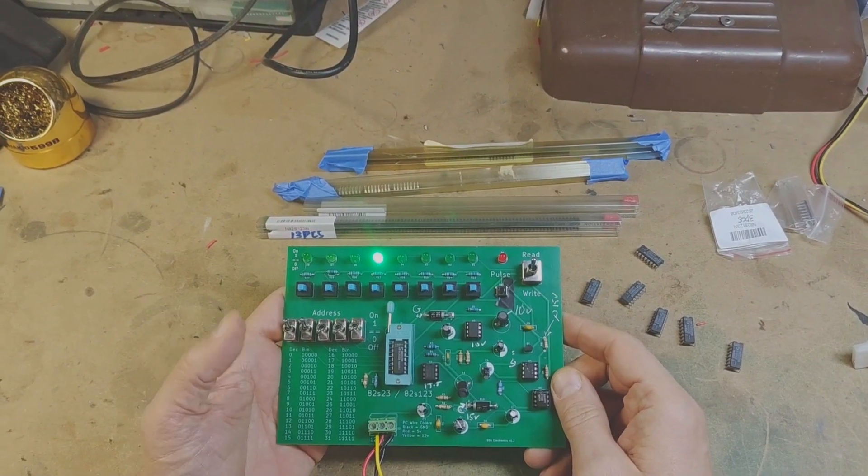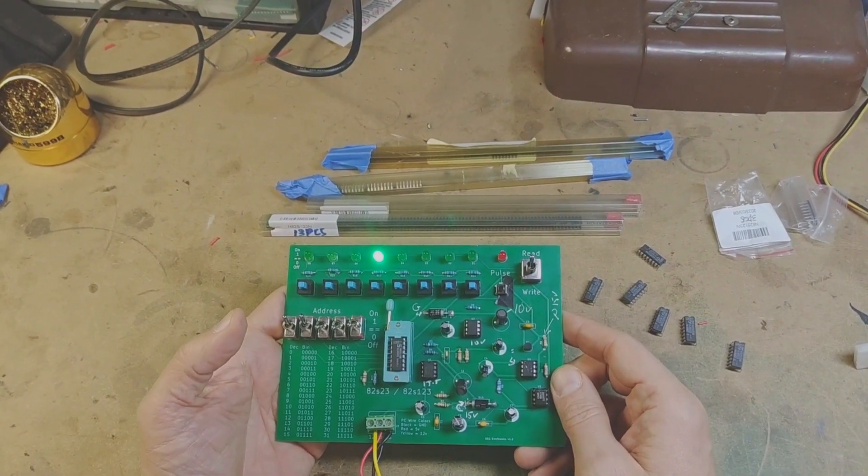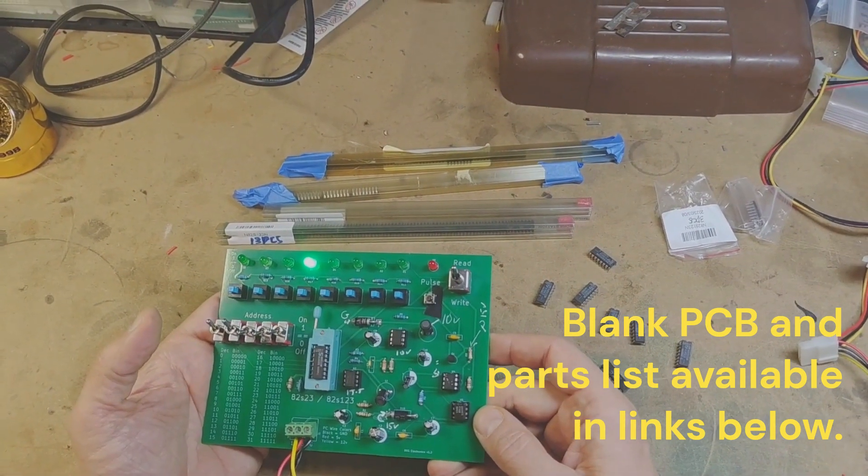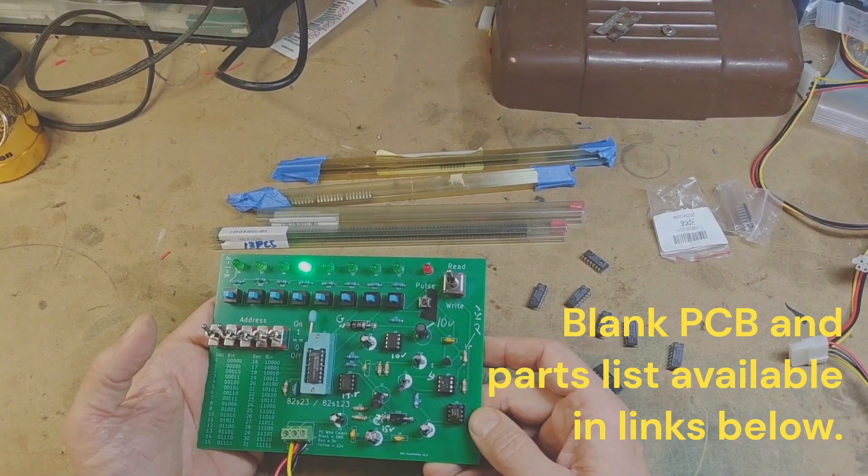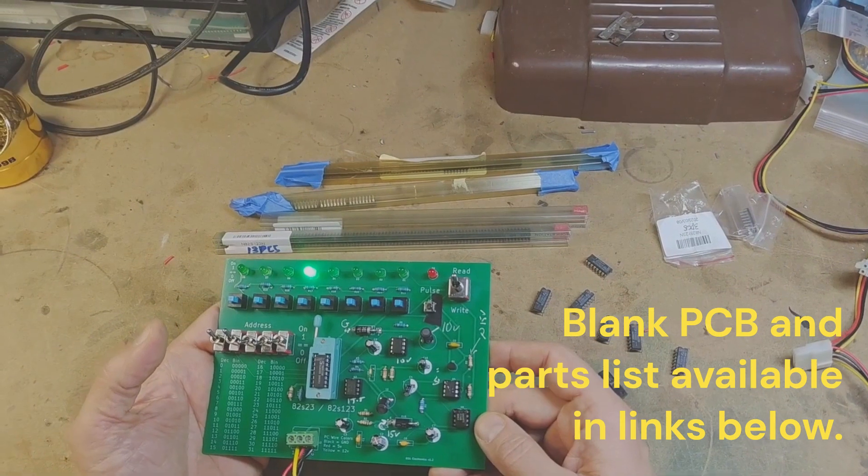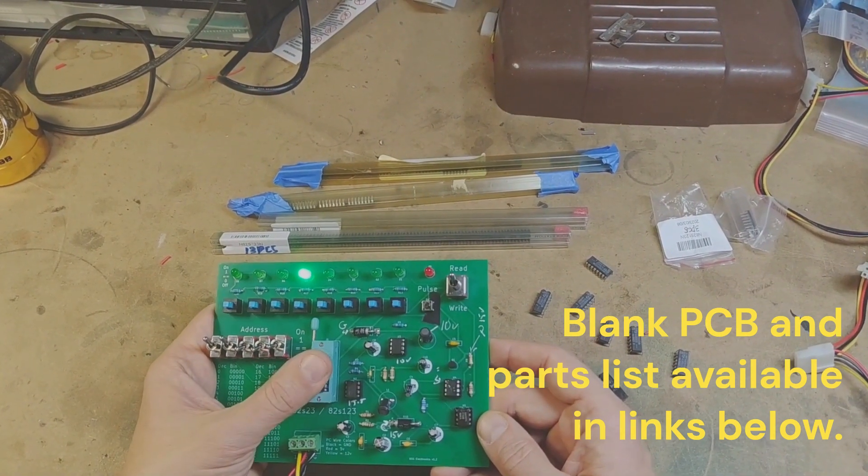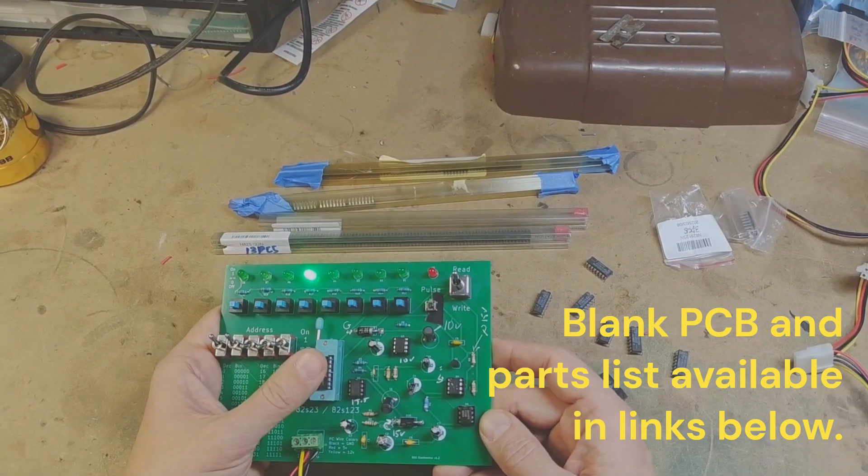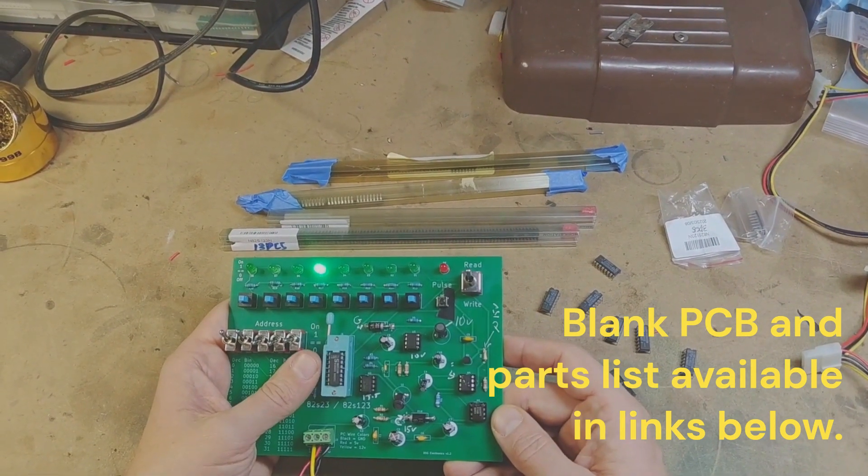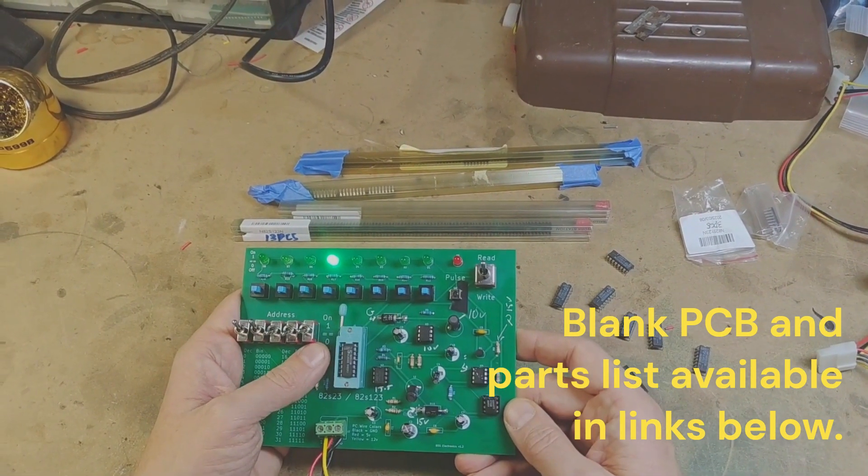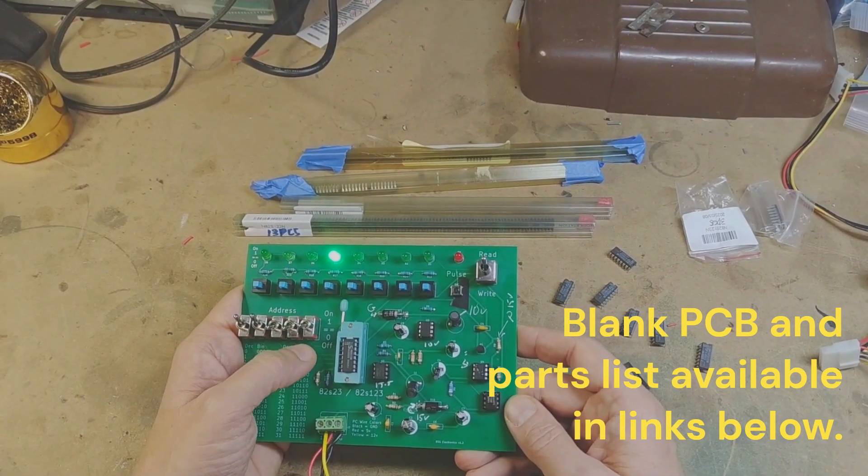So that's the programmer. Like I said, it's made for the 82S123 and 23. I actually tried it with a couple others that were 74S288 and that seemed to work as well. They did seem to get a little hot when I was testing it, but it seemed to work. Results may vary there. I'm not totally sure about the temperature, so proceed with caution if you want to use it with one of those.